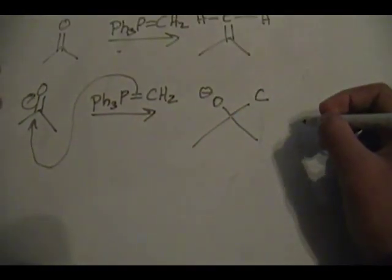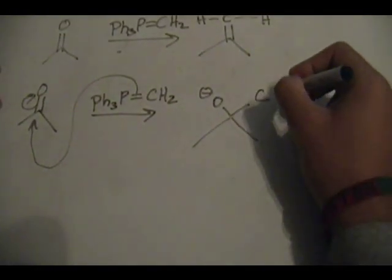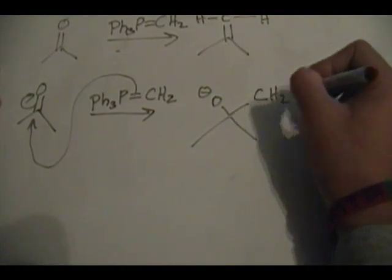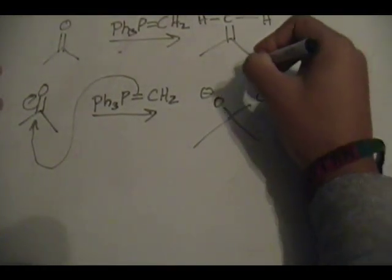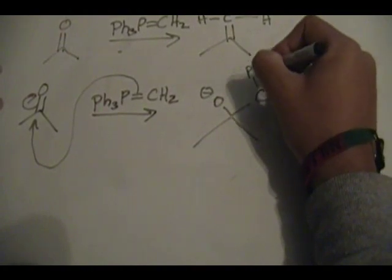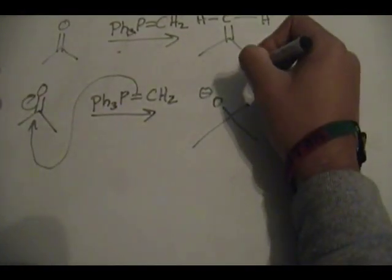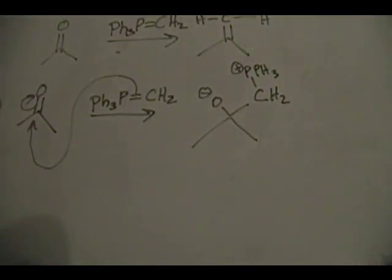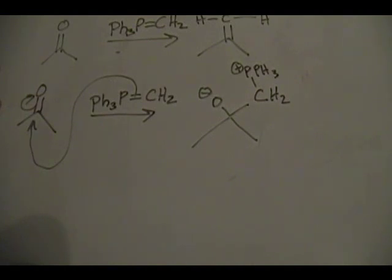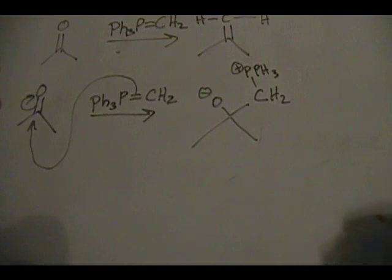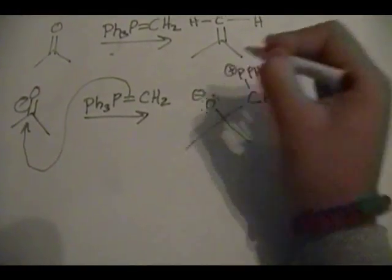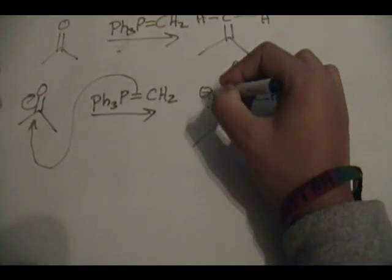What you end up with is this intermediate: an oxygen with a negative charge, your carbon with the two H's (I'll put CH2 there), and you have your PPh3. The phosphorus now bears a positive charge. You could do a formal charge calculation, it will come out to be positive.